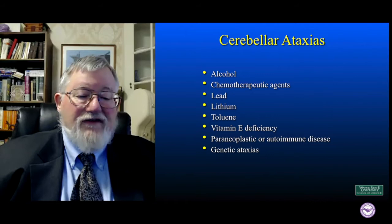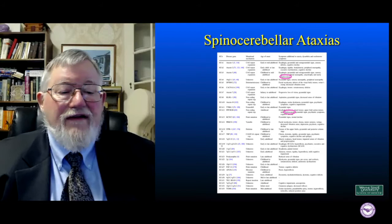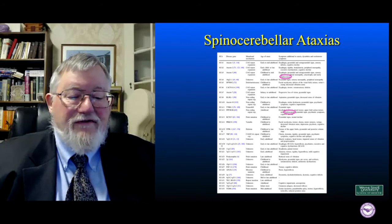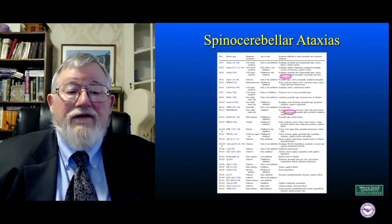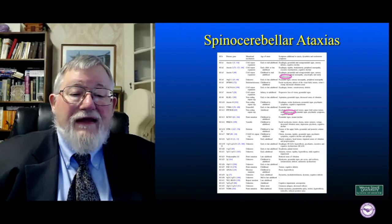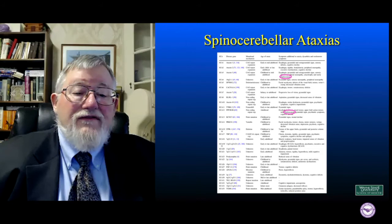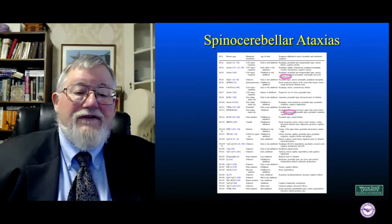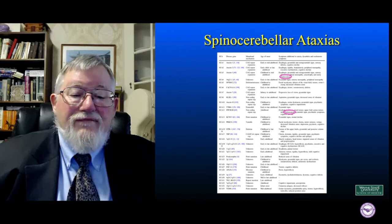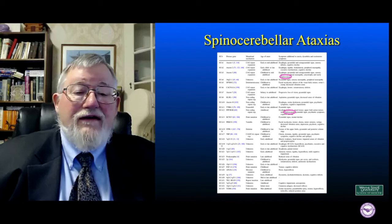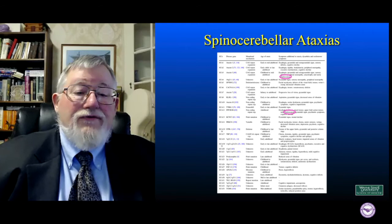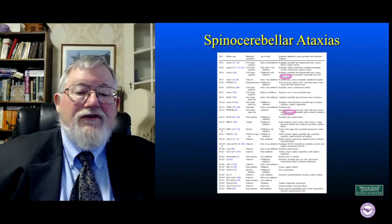And then there are genetic ataxias. Here's a big list — you can make out at the bottom that we get all the way up to spinocerebellar ataxia number 35. It's a lengthy list of different genetic spinocerebellar ataxias. Most of these start in infancy, childhood, or early adulthood, and being genetic, these are autosomal dominant diseases, which means the disease appears in every sequential generation — so you usually have a family history.